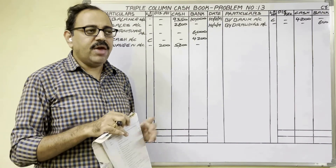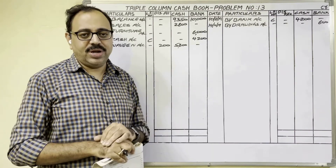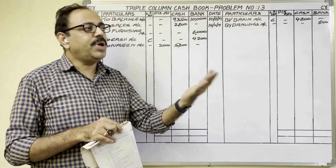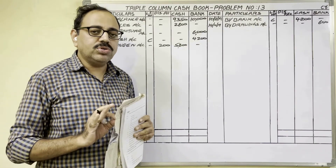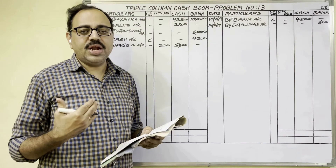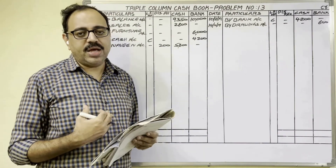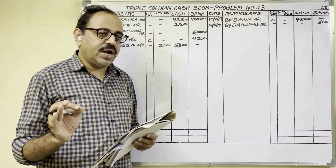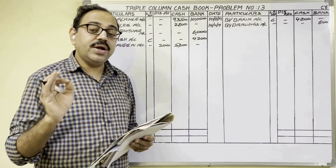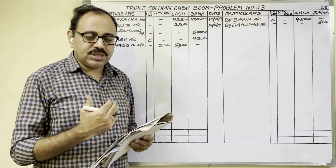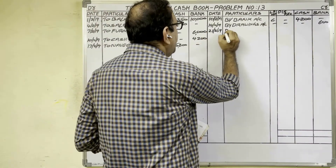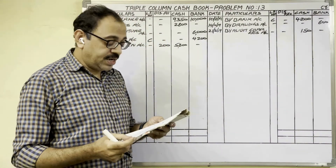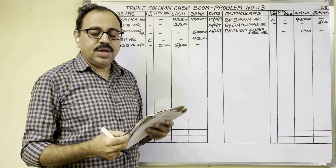21st date: Audit charges 150 rupees. Audit charges means every firm's accounts must be audited by a chartered accountant — auditing is verification of accounts. The firm submits accounts to the CA, who verifies them and certifies they are genuine. The fee paid to the CA is called audit charges. Cash is going from us, so credit side cash column. Write 'By Audit Charges' in cash column: 150 rupees.